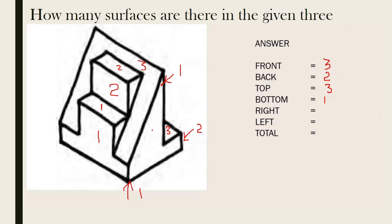Then from the right side: this one is one, then this small one — let's take it as two, then the small part is three. So three right surfaces. In this figure the right and the left side are symmetry, so the left side is also going to be three: this one is one, then from the left this part is two, which is similar to this, then this one is three.